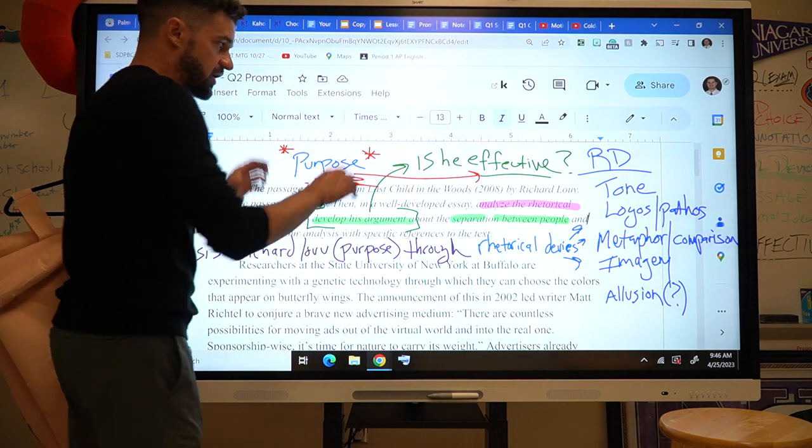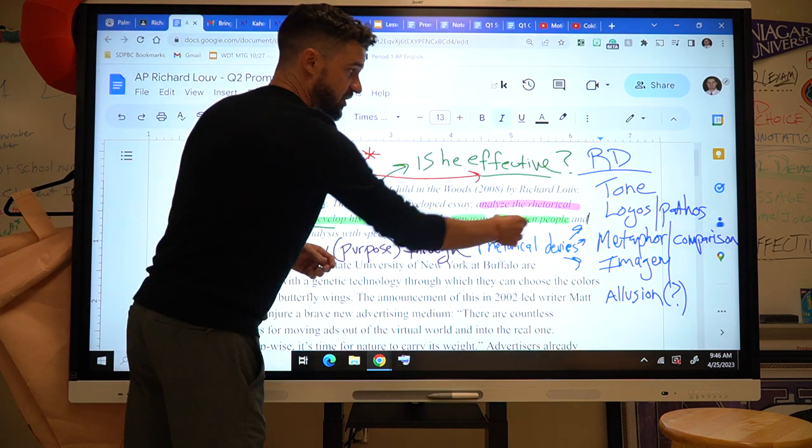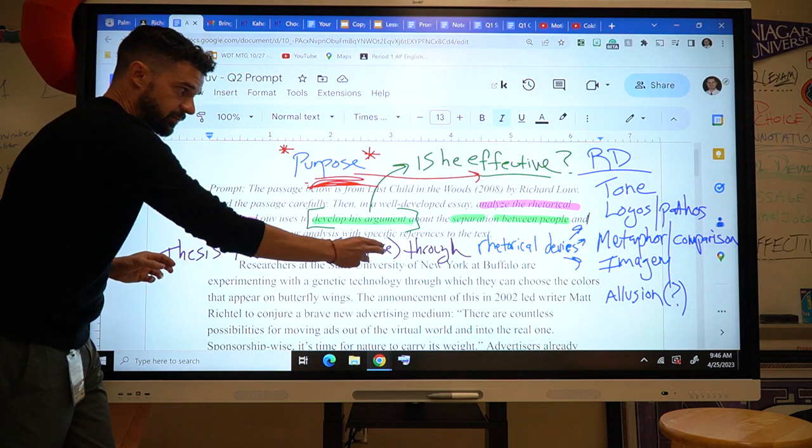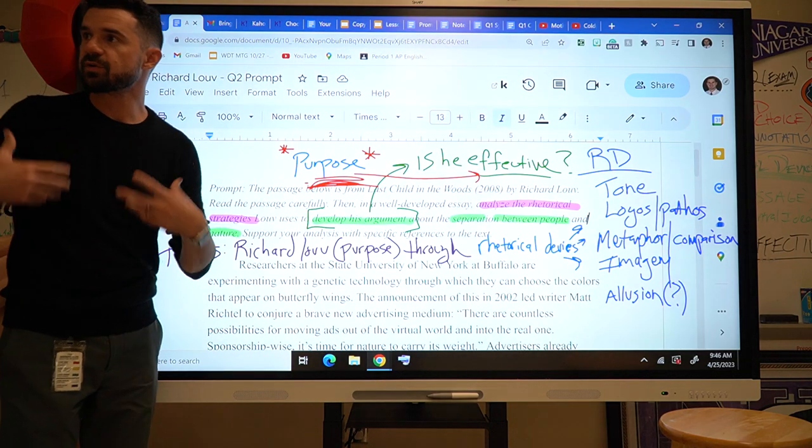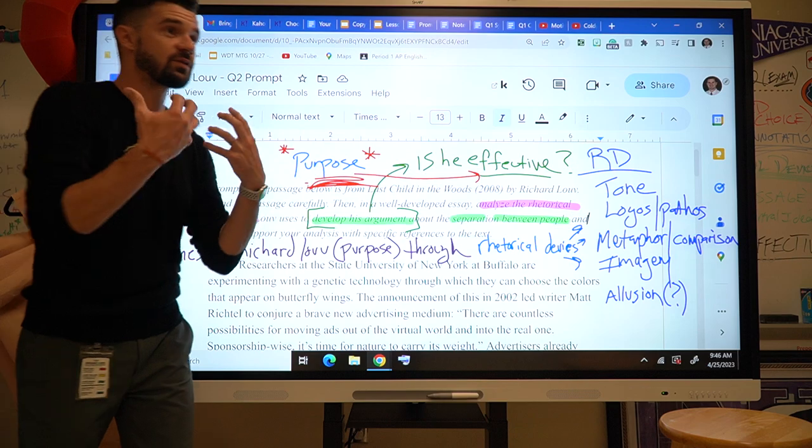So taking that a step further, your thesis is going to say that this person makes the argument that there's a separation between people and nature. That's your thesis. That's the purpose. But what he's trying to do is he's trying to persuade, take it a step further. He's persuading people to understand the importance of nature, why we're separated from it.